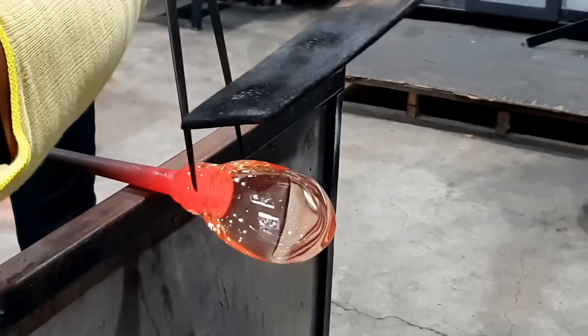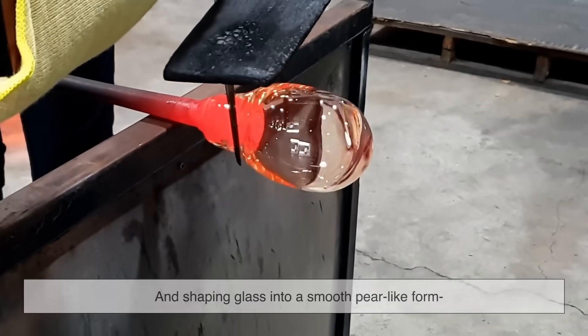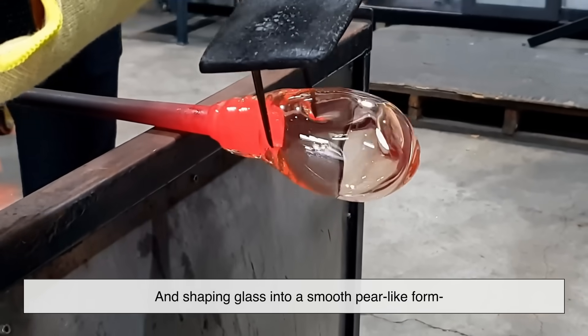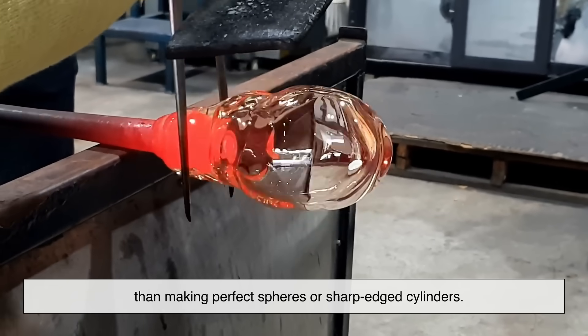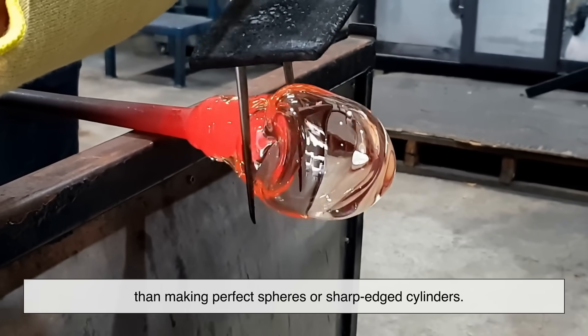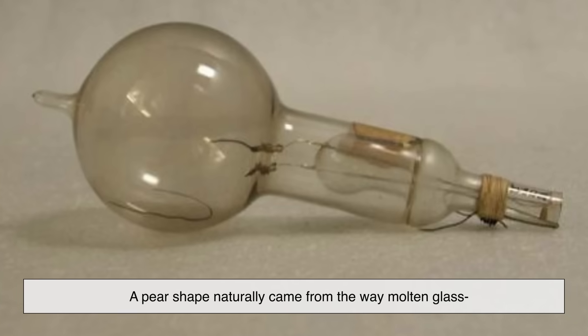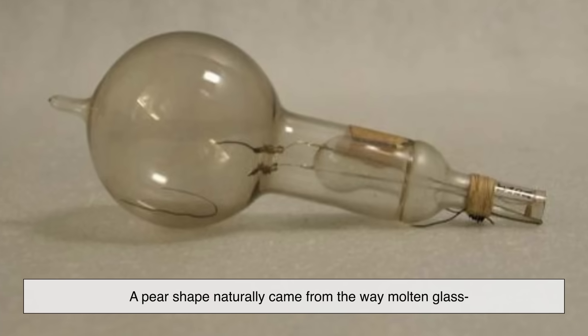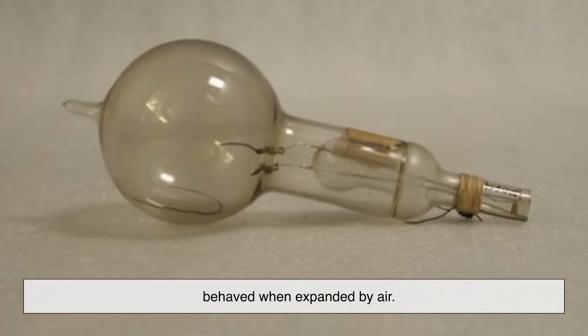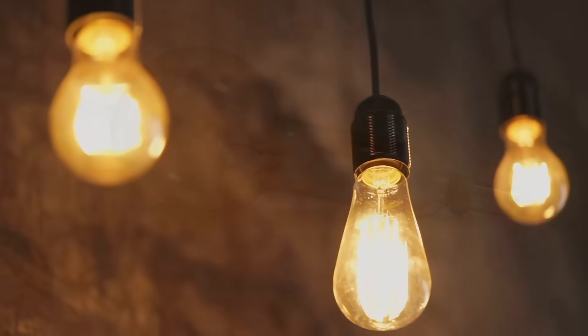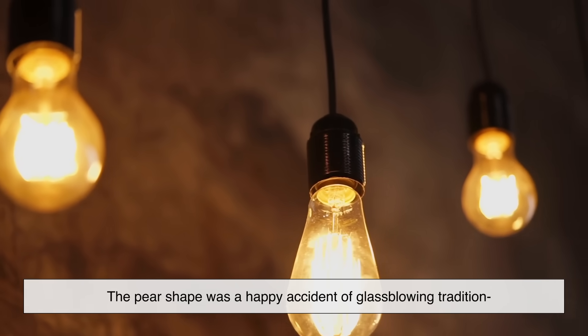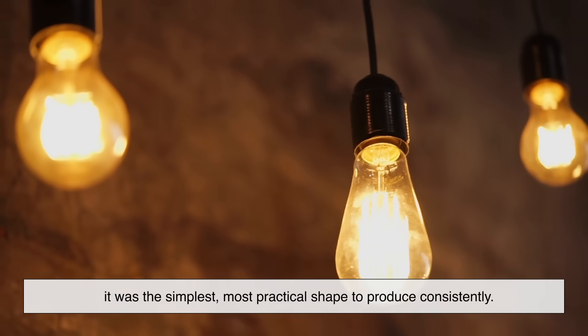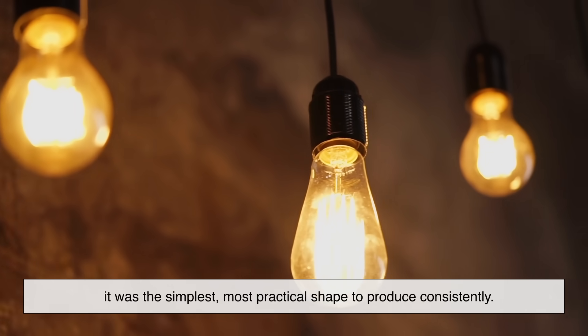The early bulbs were hand-blown glass, and shaping glass into a smooth pear-like form was actually easier for glassblowers than making perfect spheres or sharp-edged cylinders. A pear shape naturally came from the way molten glass behaved when expanded by air. So in many ways, the pear shape was a happy accident of glassblowing tradition. It was the simplest, most practical shape to produce consistently.